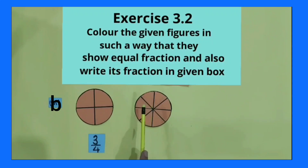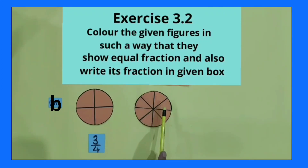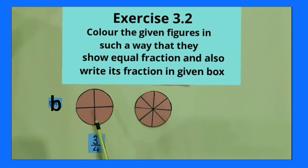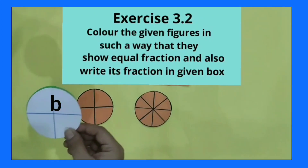The first shape is divided into four equal parts and its fraction is three by four. The second shape is divided into eight equal parts. Four is our denominator, and out of which three parts have to be colored — three is our numerator.